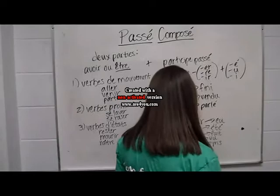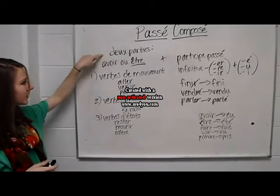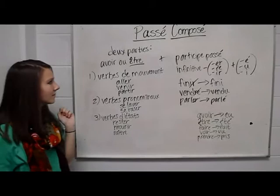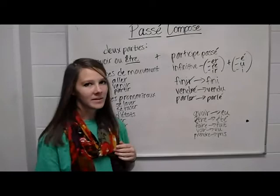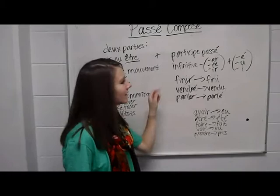So, to review, the passé composé is composed of two parts. The first part is going to be the conjugated form in the present of avoir or être. You have to use être with verbs of motion, pronominal verbs, and verbs of state or being. The second part of the passé composé is going to be the past participle. To form the past participle, use the infinitive of the main verb and then take away the ending.